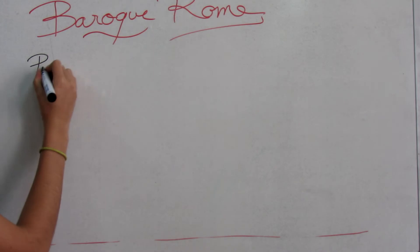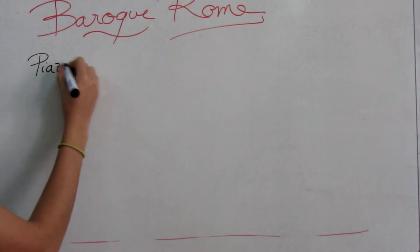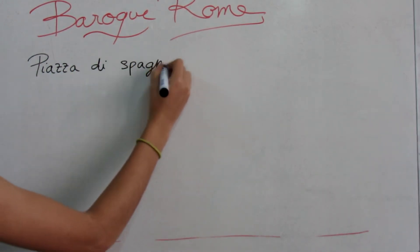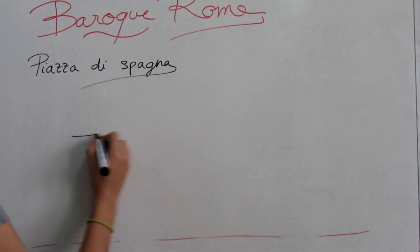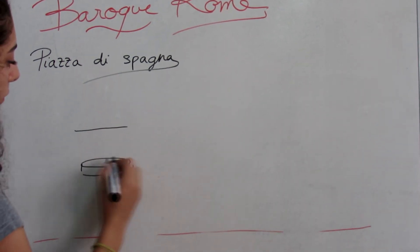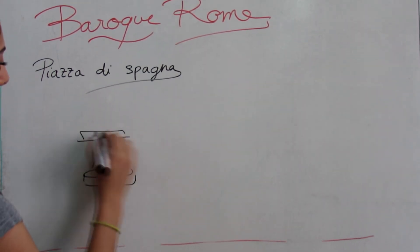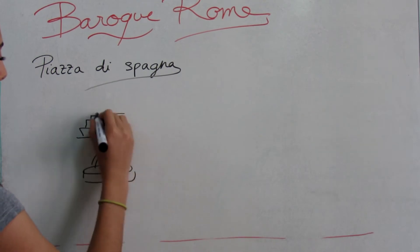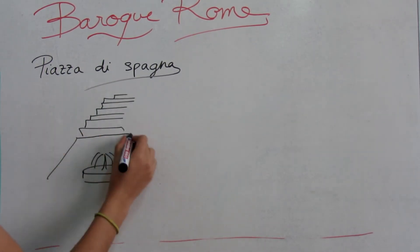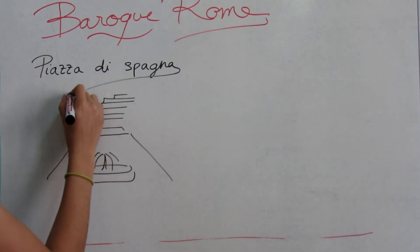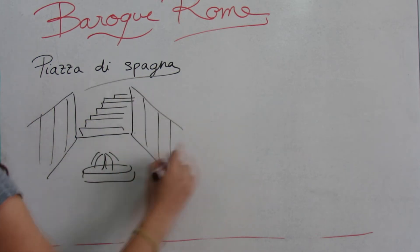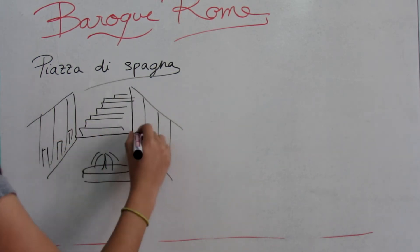The Piazza di Spagna, at the bottom of the Spanish Steps, is one of the most famous squares in Rome. It owes its name to the Palazzo di Spagna, seat of the Embassy of Spain. In the middle of the square is the famous Fontana della Barcaccia, dating to the beginning of the Baroque period, created by Pietro Bernini and his son.